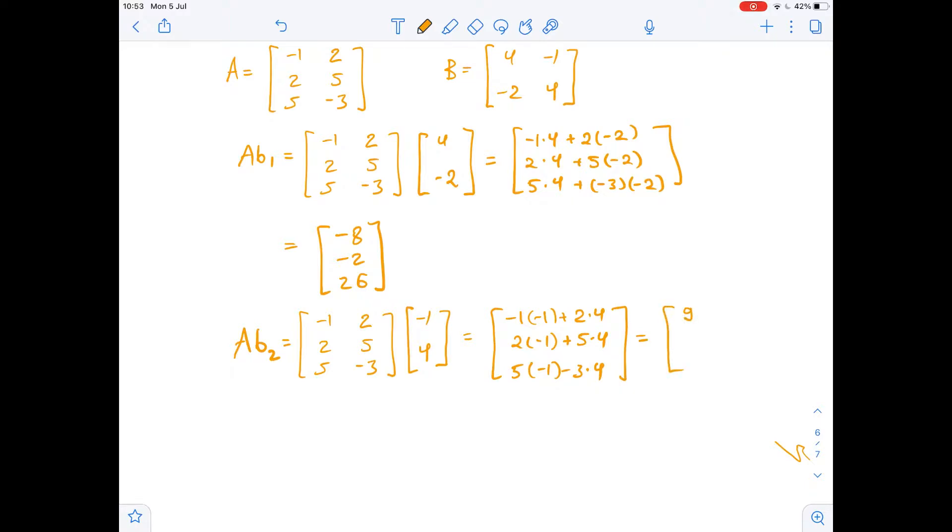And this equals 1 plus 8, which is 9, negative 2 plus 20, which is 18, and negative 5 minus 12 is negative 17.